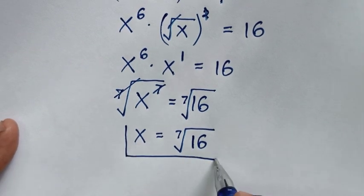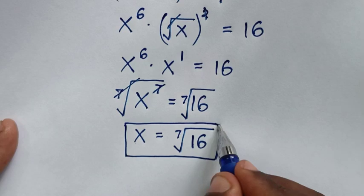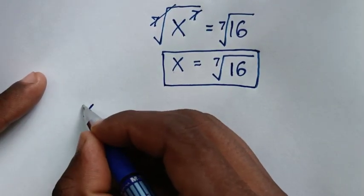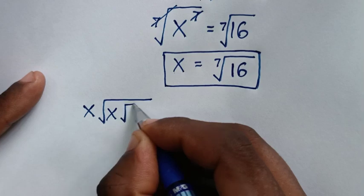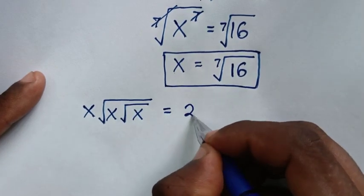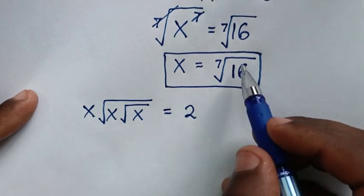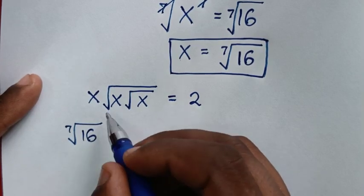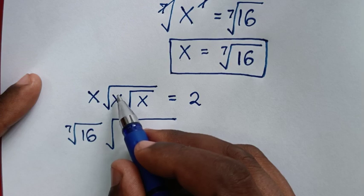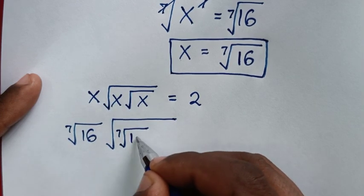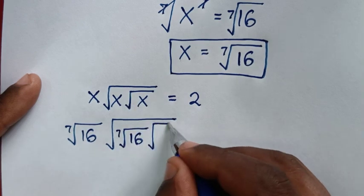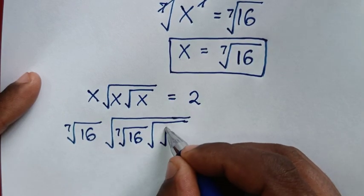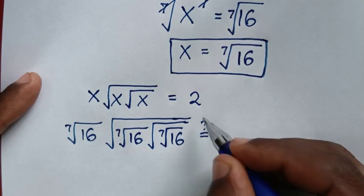So this is the final answer for the value of x in this problem. Now to check or verify this answer, we go back to our problem: x square root of x under square root of x is equal to 2. We substitute x equals the 7th root of 16, so it becomes 7th root of 16, square root of 7th root of 16, under square root of 7th root of 16, is equal to 2.